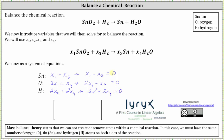From here, we'll set up an augmented matrix, and then write the augmented matrix in reduced row echelon form. Because we have four variables in three equations, we will have a three by five augmented matrix, where the first column will be the coefficients of x sub one, the second column will be the coefficients of x sub two, the third column will be the coefficients of x sub three, the fourth column will be the coefficients of x sub four, and the fifth column will be the constants.